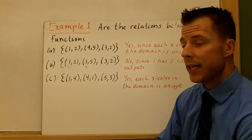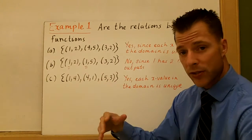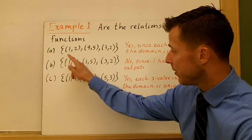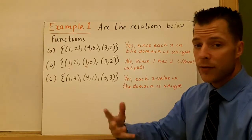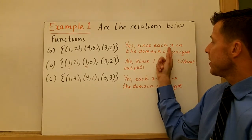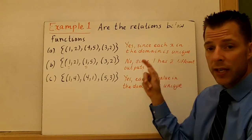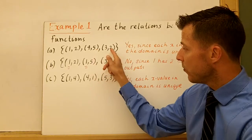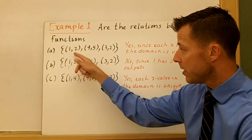So in example one are the relations below functions. They're relations because they're sets of order pairs. They're collections of order pairs. So I just quickly scan the x values. One, four, and three. They're all different. They all have a y value. I have a function. So this is a function because each x in the domain is unique. And by unique we mean different. So they can have the same y values. These x values can have the same y values as long as they're different.